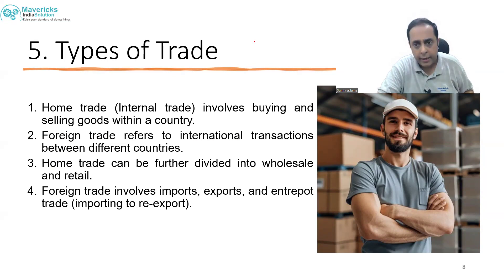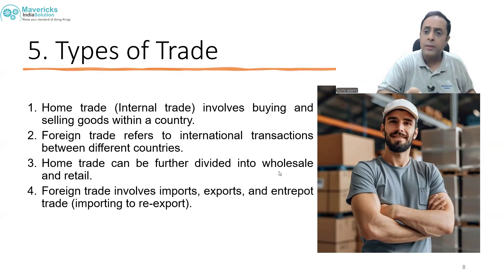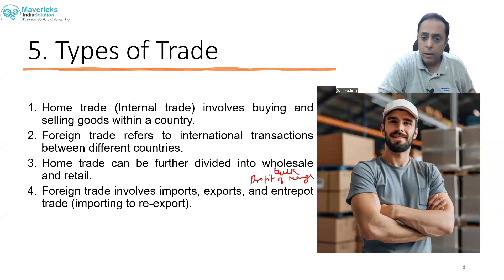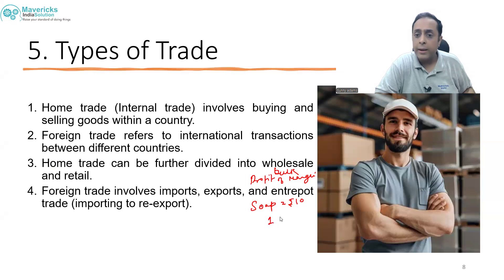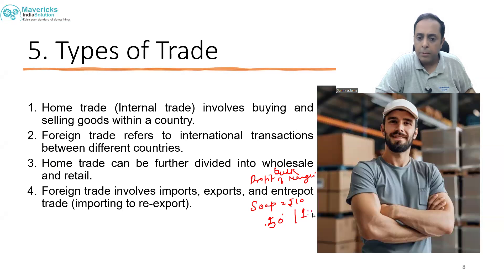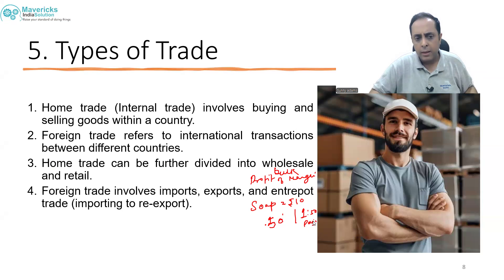Home trade can be further divided into wholesale and retail. Wholesalers purchase goods in bulk with a smaller profit margin — for example, on a 10-rupee soap a wholesaler earns about 50 paise. Retailers sell goods individually and earn a larger margin of around 1 rupee 50 paise. So wholesalers buy and sell in bulk, while retailers sell item by item.